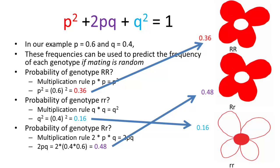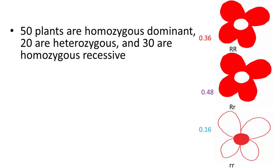This is the expected frequencies of each of the genotypes. p² is 0.36, q² is 0.16, and 2pq is 0.48. Again, this is expected. Let's say we actually look at the genetics: 50 of them are homozygous dominant, 20 are heterozygous, and 30 are homozygous recessive. We can compare that to our predicted to determine if they are in Hardy-Weinberg equilibrium. If they are in Hardy-Weinberg equilibrium, those frequencies will match up.